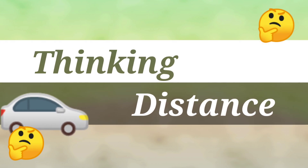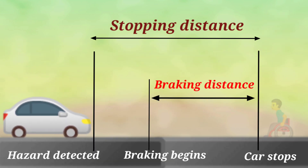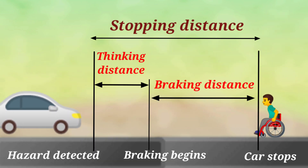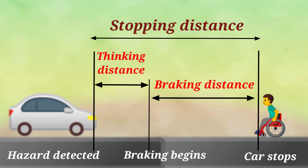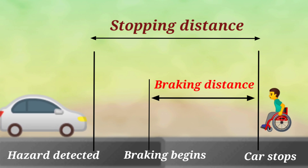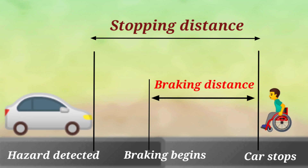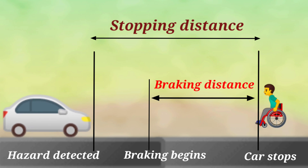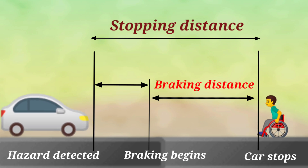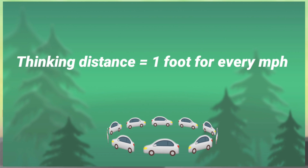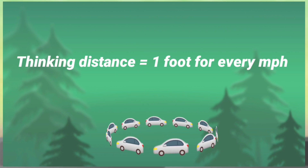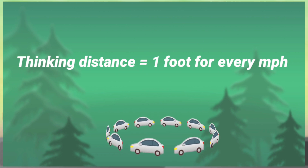Let's first understand what is thinking distance. Thinking distance is the distance traveled between the time the need to brake is realized and the time it takes to activate the brakes. That is, thinking distance is approximately one foot for every mile per hour you are traveling at.